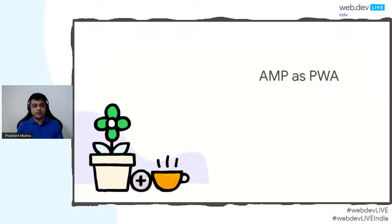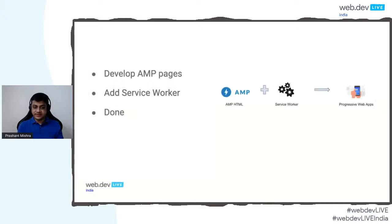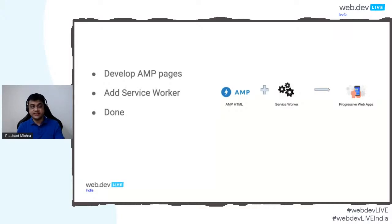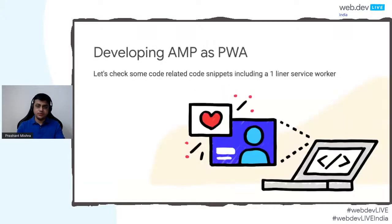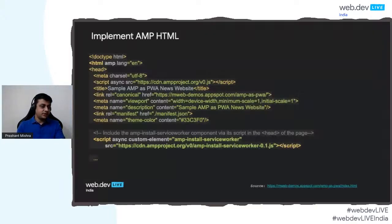Now that we've discussed AMP and PWA, let's talk in detail about what AMP as PWA is. Basically, we take the AMP code, add a service worker — which can be as small as just a single line of JavaScript code — and we get a Progressive Web App. This app can work in flaky networks, and even when offline, content will be rendered and the dinosaur won't be shown. Let's look at code snippets — this is how a simple vanilla AMP HTML looks. The second line is html amp — that amp attribute signifies this is AMP HTML, not vanilla HTML.